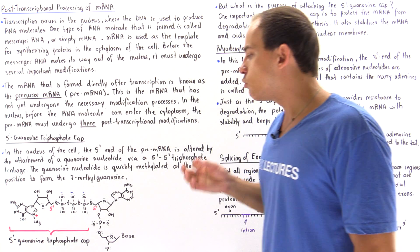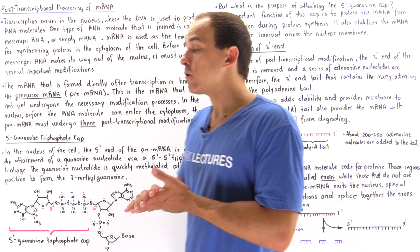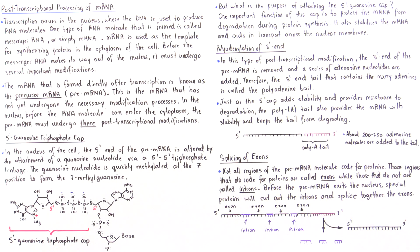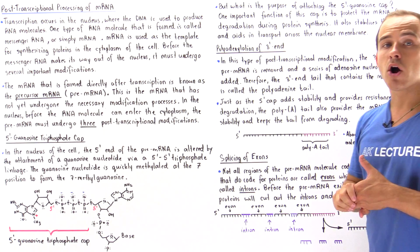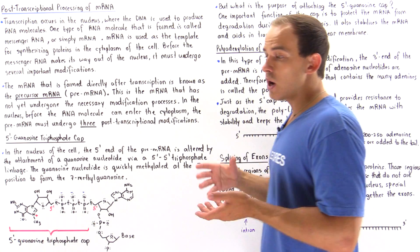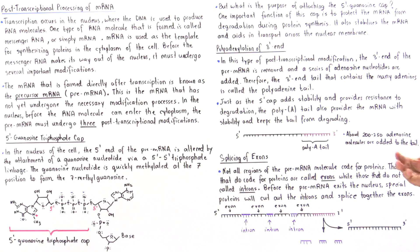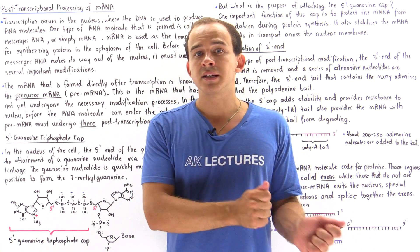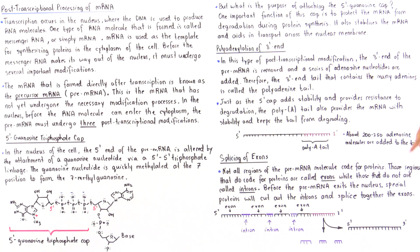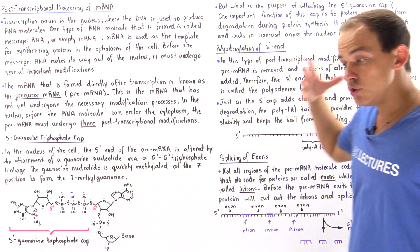This is the 5' guanosine triphosphate cap. One important function of this cap is to protect our mRNA from degradation that could take place during the process of translation and protein synthesis. Additionally, the addition of the 5' cap gives our mRNA the ability to leave our nucleus through the nuclear pores and enter the cytoplasm. It stabilizes the mRNA molecule and aids in transport across the nuclear membrane.